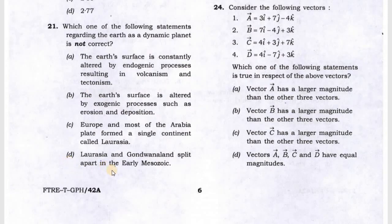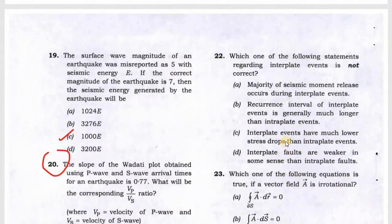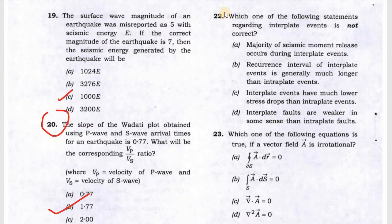Next question: which of the following statements regarding earth as a dynamic planet is not correct? If the planet is not correct, it is option D, so D will be the answer. Next is question 22, it is quite tricky. They are asking the difference between interplate and intraplate. Interplate is between two plates and intraplate is inside the plate. They are saying interplate has lower stress, which is not correct, so this is the not correct option.